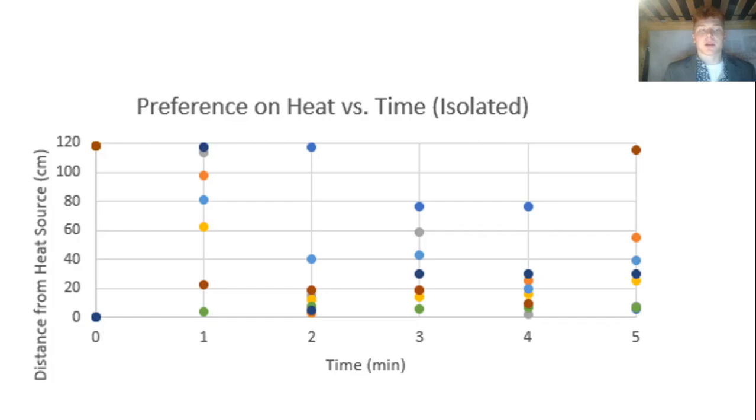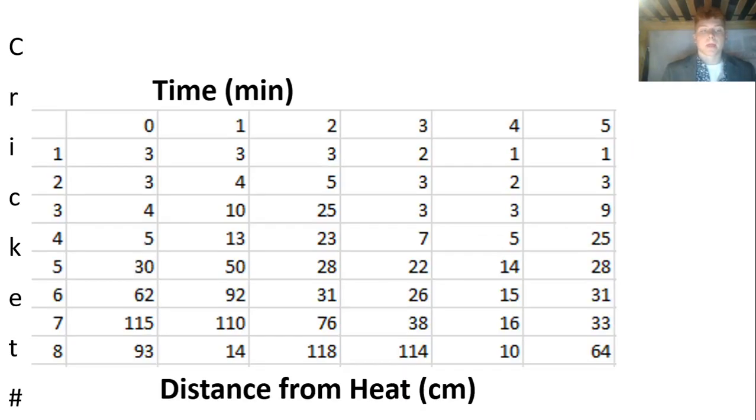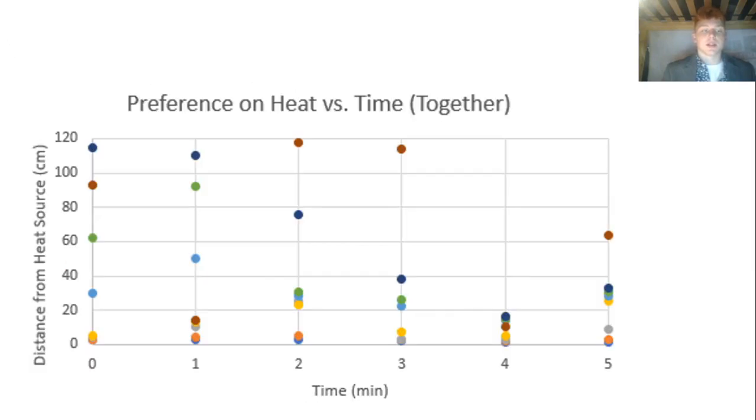When we look at the dispersion of data points, we can see that the cluster of points across the x-axis gets tighter and tighter, and also they seem to go lower and lower. Then we did the same thing looking at crickets in groups rather than isolation and we see a similar pattern. As time goes on, the data points become closer together and go lower on the graph.